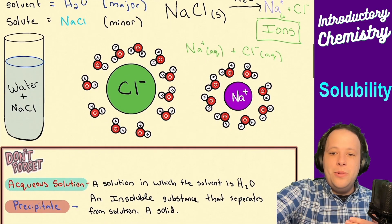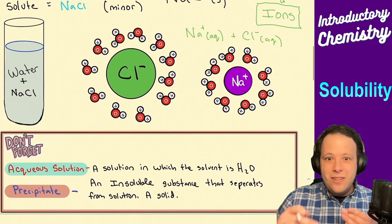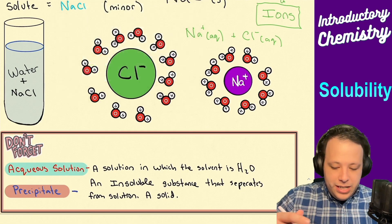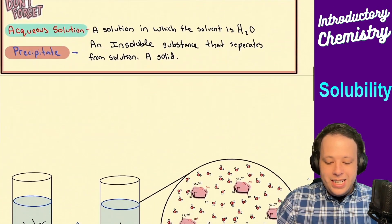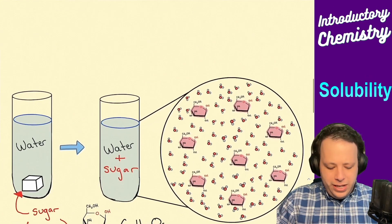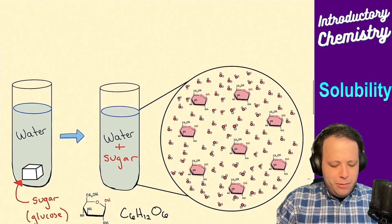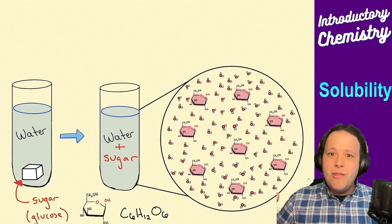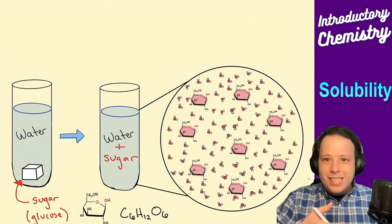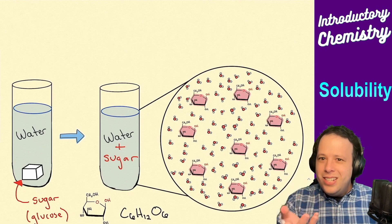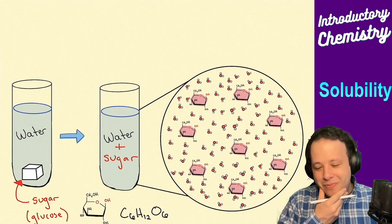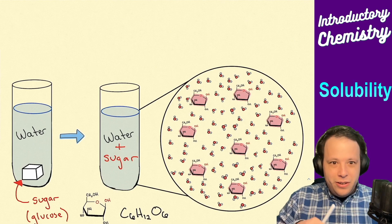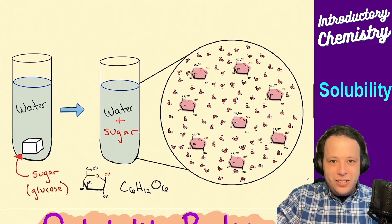Are ions the only things that dissociate? What exactly dissolves? What if we look at a different example — what if you take sugar and throw it into a glass of water? Does it dissolve? Sugar is not ionic — it's C6H12O6.